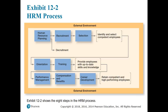Exhibit 12-2 shows the eight activities in the HRM process. The first three activities ensure that competent employees are identified and selected. The next two involve providing employees with up-to-date knowledge and skills. And the final three ensure that the organization retains competent and high performing employees. Before discussing those specific activities, we need to look at external factors that affect the HRM process.